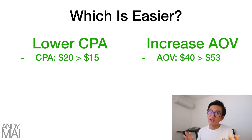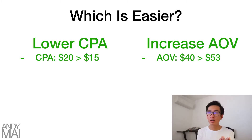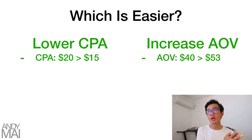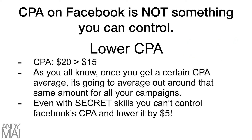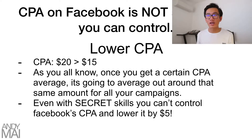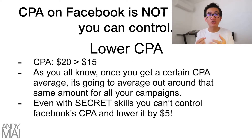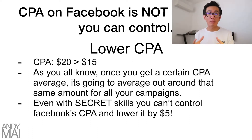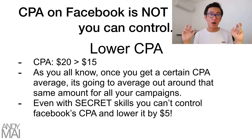Now, which is easier? Is it easier to lower your CPA from $20 down to $15, or is it easier to increase your AOV from $40 to $53? The CPA on Facebook is not something you can control. How do you tell Facebook to give you a lower cost of purchases?